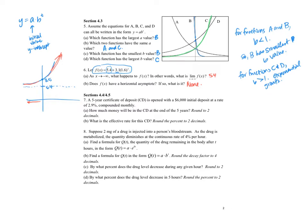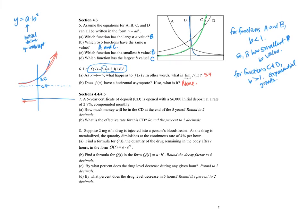So on number 7, it says a 5-year CD is opened with $6,000 initial deposit at a rate of 2.9% compounded monthly. The question is, how much money will there be in the CD at the end of 5 years? For this one, I want to use this model where we have P is equal to P-naught times 1 plus the rate divided by the number of times it's compounded to the number of times times t. And so our number of times since it's compounded monthly, our n is 12. And I want to find out how long it's going to be 5 years, so that's our t. So I'll have P equals 6,000 times 1 plus 0.029 divided by 12 to the 12 times 5.